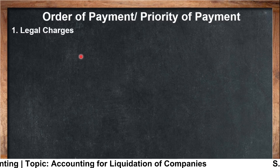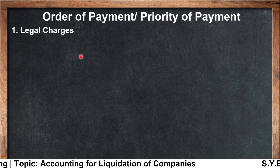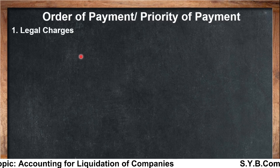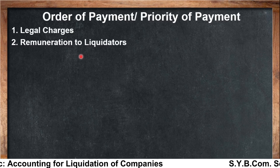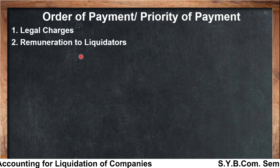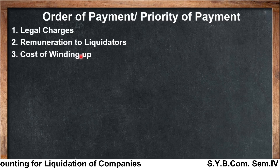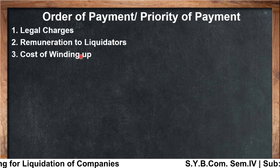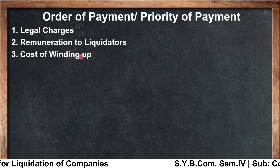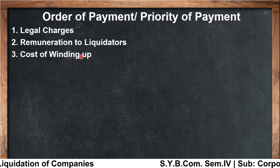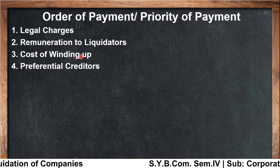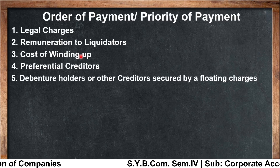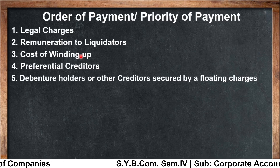Here you can see the order of payment or priority of payment. The liquidator has to pay first of all the legal charges — whatever legal charges are there. After payment of legal charges, he can pay his own remuneration, called the liquidator's remuneration, which is often fixed at a percentage on the sale of assets or amount distributed among creditors. The third is cost of liquidation, that is realization expenses or whatever expenses have been made for winding up. Then preferential creditors are paid, and after that debenture holders or other creditors secured by floating charge.